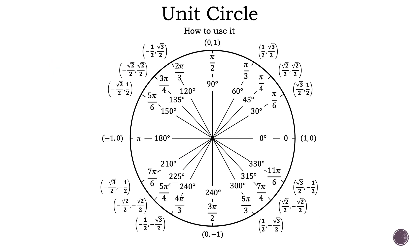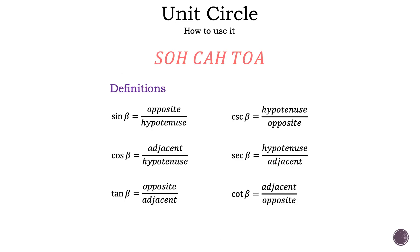Now let's talk about the unit circle. We could memorize this, but let's use what we already know. Let's talk about SOHCAHTOA. Remember, sine is opposite over hypotenuse, and cosecant is the reciprocal. Cosine is adjacent over hypotenuse, and secant is the reciprocal. And finally, tangent is opposite over adjacent, and cotangent is the reciprocal.